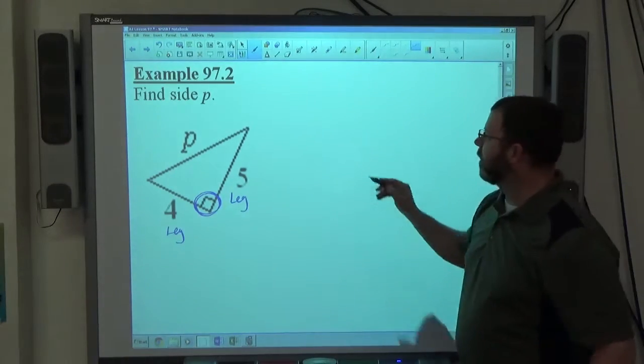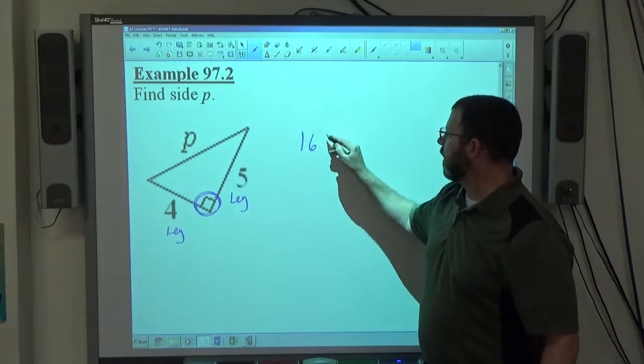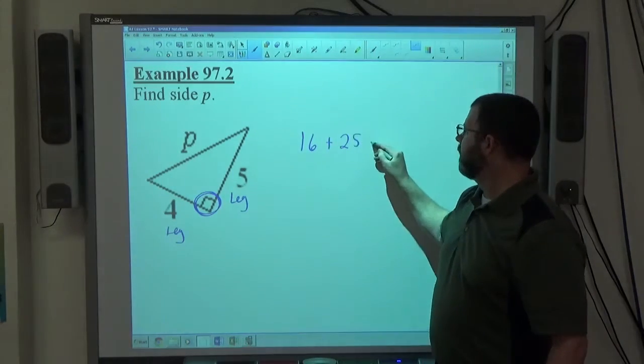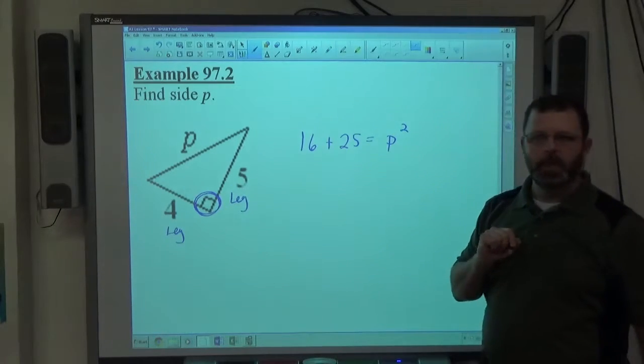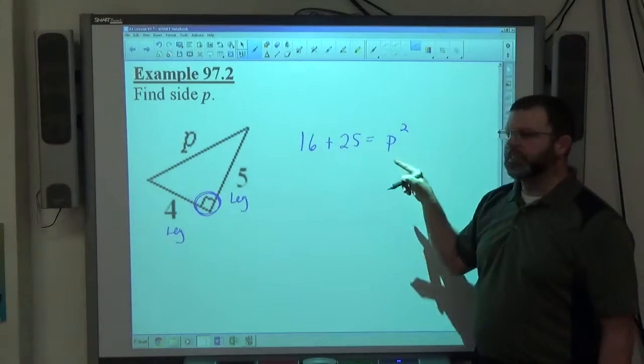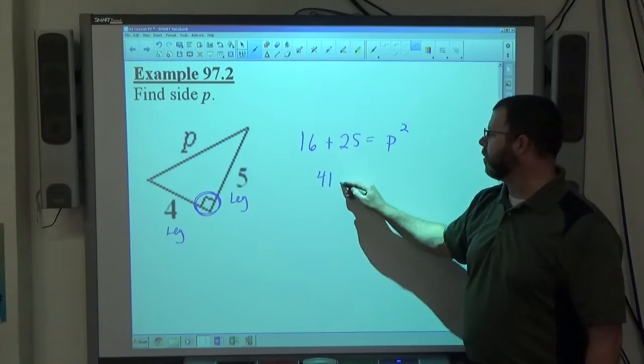So again, if I'm applying the Pythagorean theorem, leg 1 squared plus leg 2 squared is equal to the hypotenuse squared. This time, both numbers end up on the same side together, so 41 is equal to P squared.